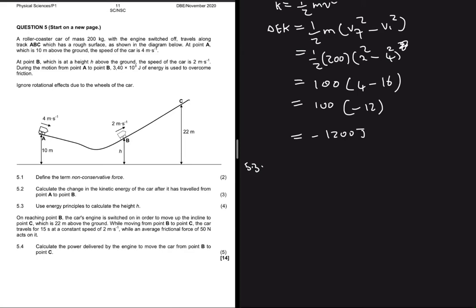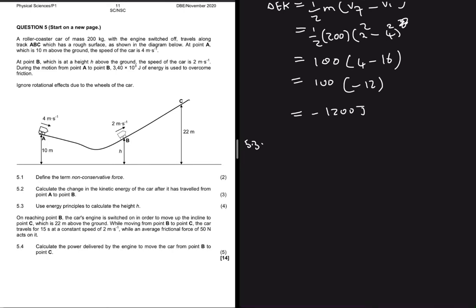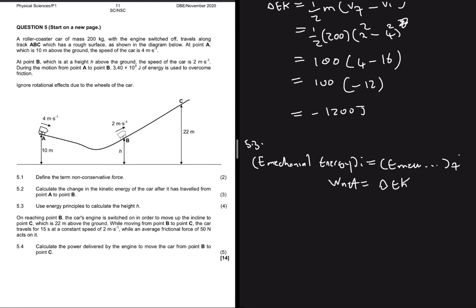For part 5.3, we use the energy principle to calculate height h. There are three equations that should come to mind: first, mechanical energy is conserved (E_mech initial = E_mech final); second, W_net = ΔKE; and third, W_non-conservative = ΔKE + ΔEP. Whenever a question says 'use the energy principle,' we use one of these three equations.